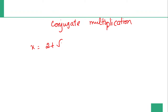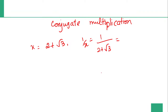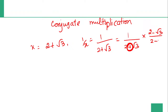x is equal to 2 plus root 3. So 1 by x will be 1 by 2 plus root 3. The conjugate of 2 plus root 3 has the opposite sign, so it is 2 minus root 3. Multiply by 2 minus root 3 over 2 minus root 3.